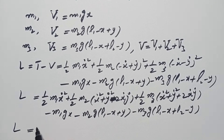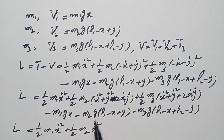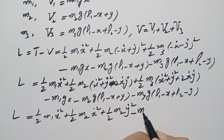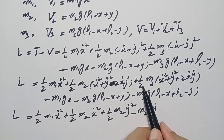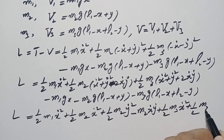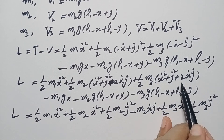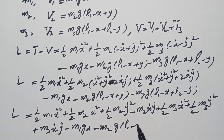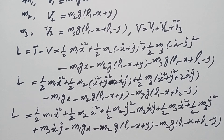Collecting terms: ½m1ẋ² + ½m2ẋ² + ½m2ẏ² − m2ẋẏ + ½m3ẋ² + ½m3ẏ² + m3ẋẏ, minus the potential energy −m1g·x − m2g(l1 − x + y) − m3g(l1 − x + l2 − y). This Lagrangian depends on the two generalized coordinates x and y.